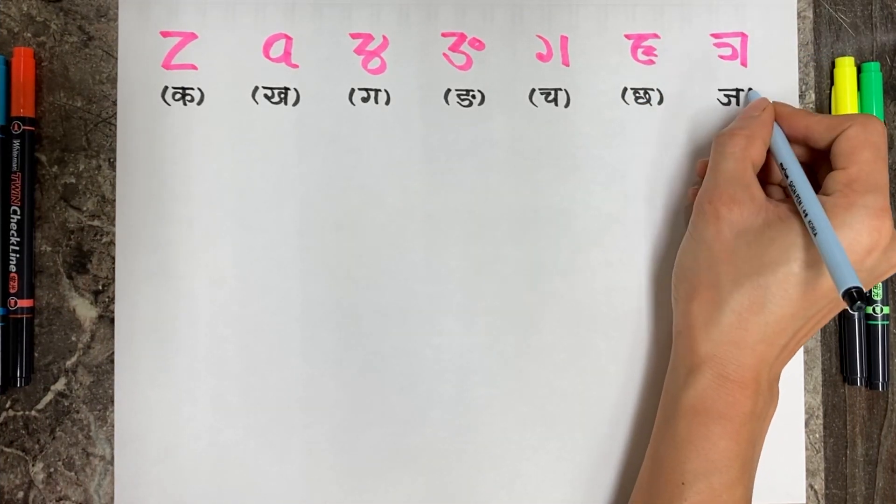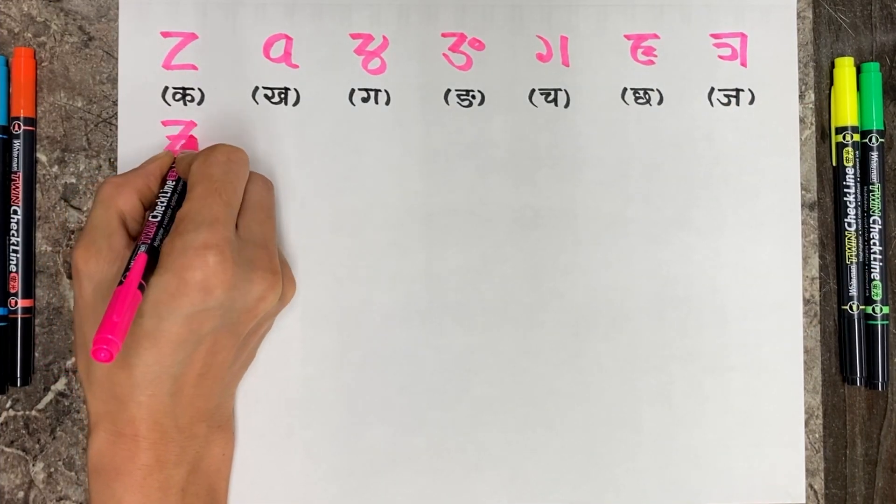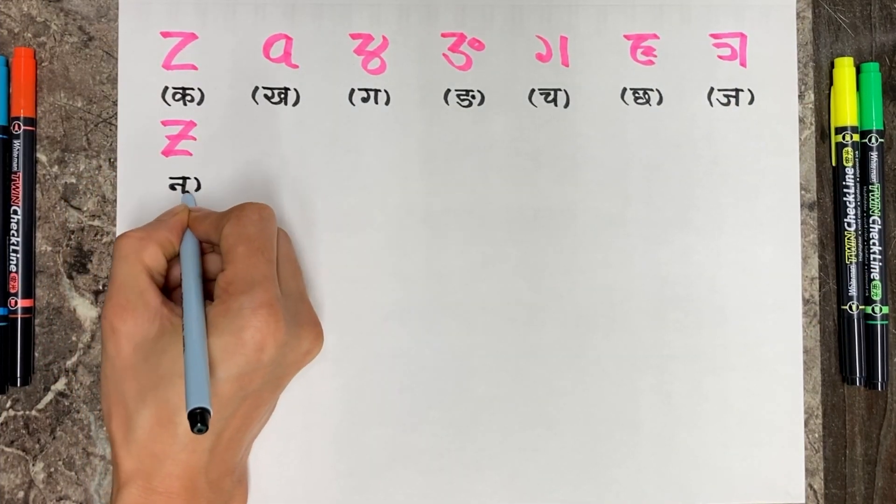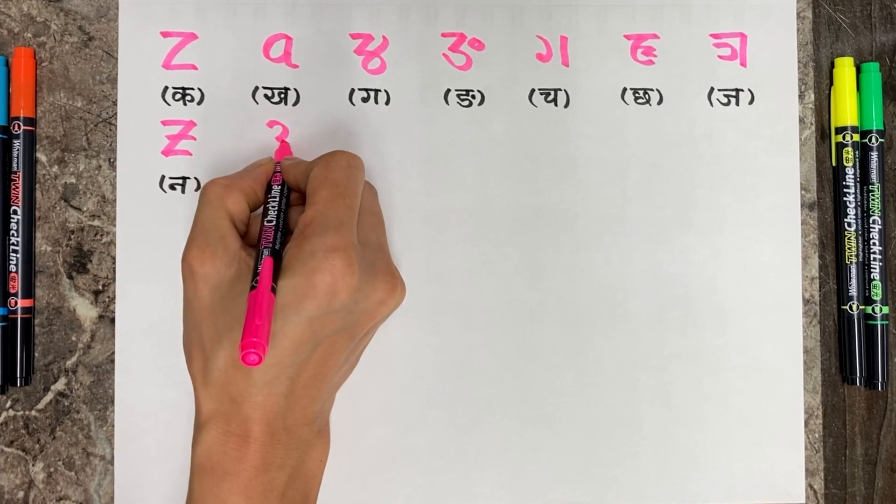બરચાર પ્રસાર કઈ ક્રમાં આપુલે વલીદાની ને દીનુ પર્યો ઉણકો યોગ્દાન કો સમાન ગર્દે ઉક્ત લીપી લી સિરજંગા લીપી વણીયો